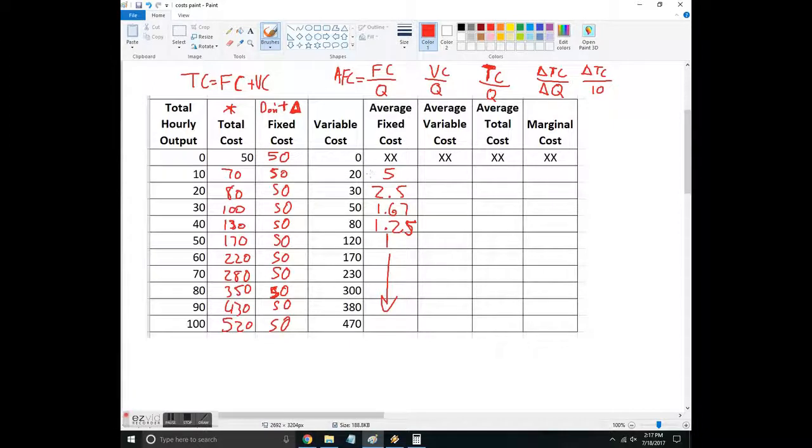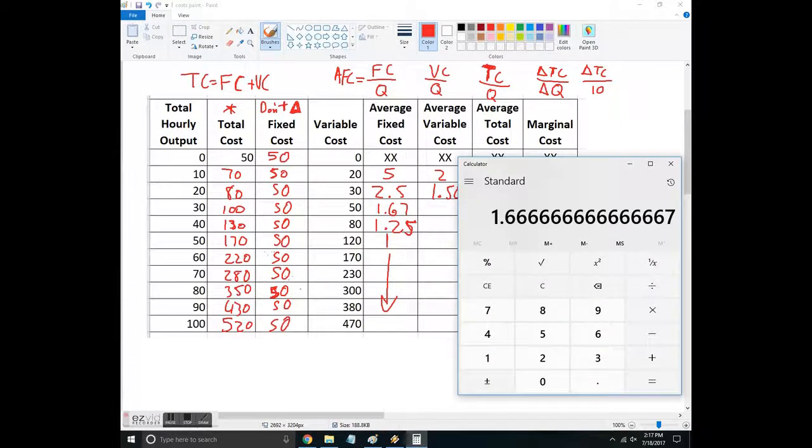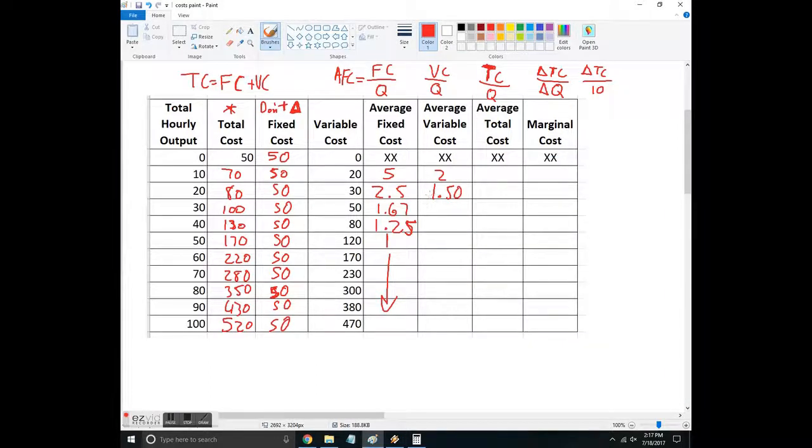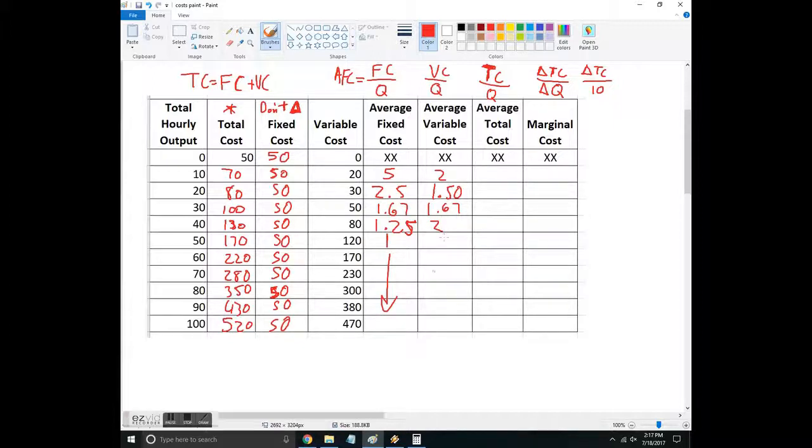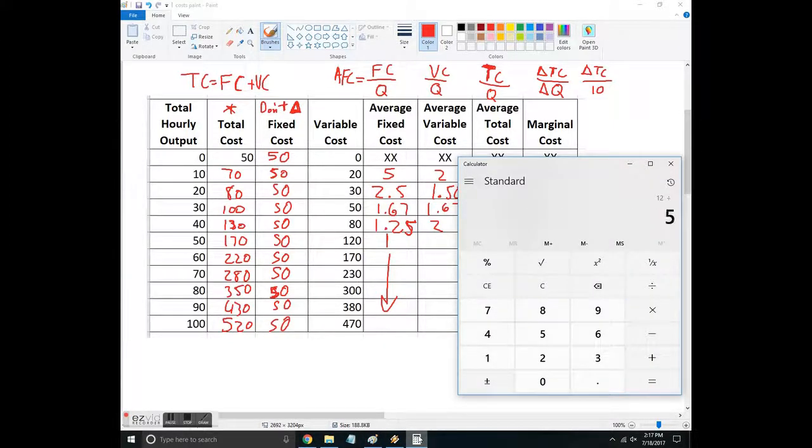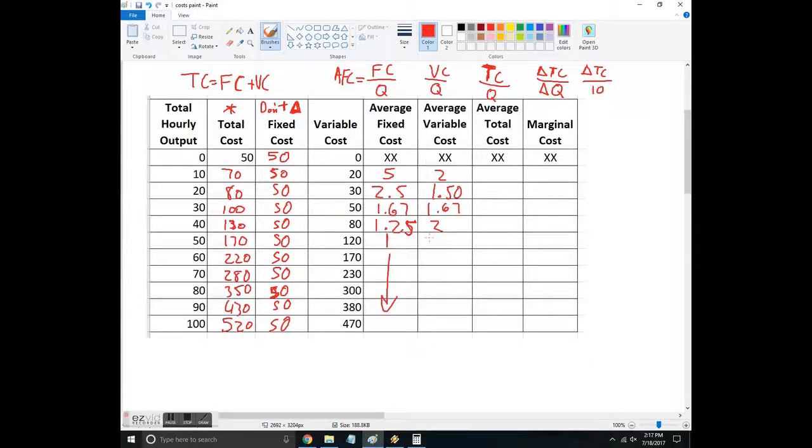Average variable cost is the variable cost over the quantity. So the first one is 20 over 10, which is two. The next one is 30 over 20, which is one dollar 50. Next one is 50 over 30 or really five over three. We got one point six seven, just coincidental. Next one is 80 over 40 is two. Next one is 120 over 50. 12 over five is 2.4. So you can keep doing these, just plug them in and fill them in.